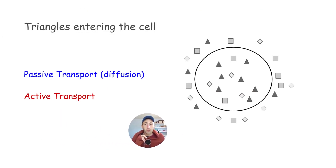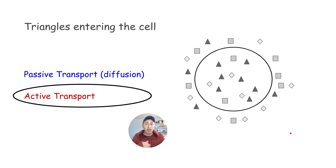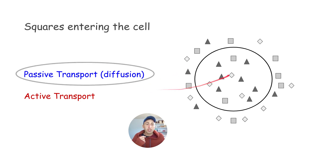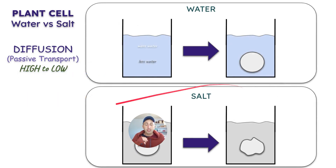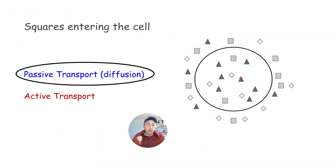For example, if triangles trying to enter a cell — there are more inside than outside, that's from low to high concentration outside, so that would be active transport. If squares are entering a cell and there are more on the outside than the inside, that would be passive transport from high to low. Transport can also apply going out of the cell, not just going in.